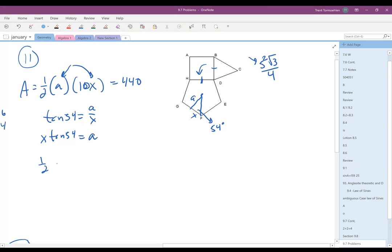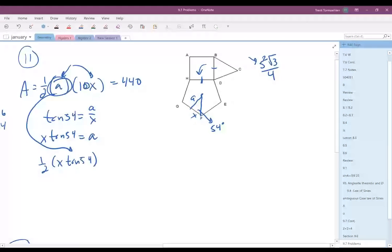Now, when I make that substitution, instead of A right here, I substitute in X tangent 54. I go ahead and let this be 10X right here because it already is.